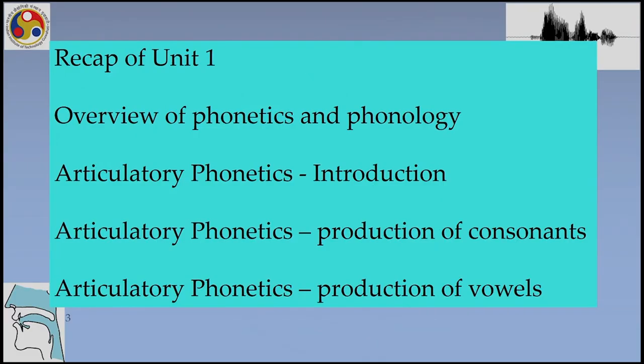In Unit 1, we had a brief overview of phonetics and phonology. After that, we looked into the various aspects of articulatory phonology, production of consonants and production of vowels. In the overview, we went through basic terms like phoneme as a unit of abstract representation, and also other units like phon and allophones. We saw how phonetics deals with the physical manifestation of sounds.